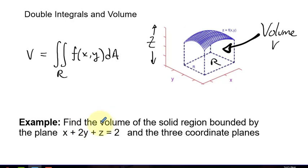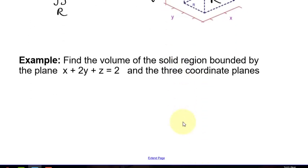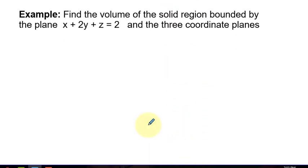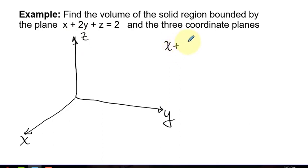Find the volume of the solid region bounded by the plane x + 2y + z = 2 and the three coordinate planes. So what am I talking about there? Let's draw a picture. Let's start off with an X, Y, Z axis and we've got this surface in three dimensional space given by this equation that happens to be a plane because all of the terms are degree 1.